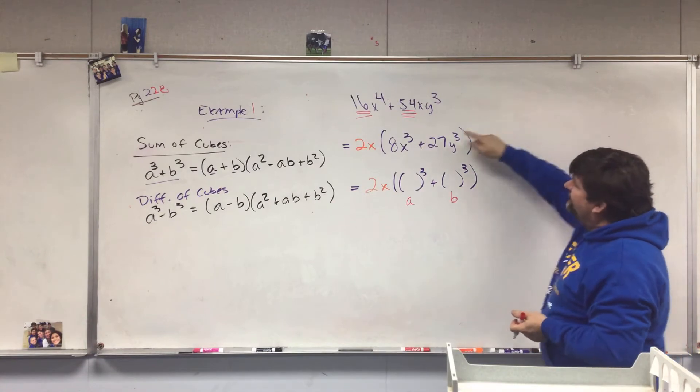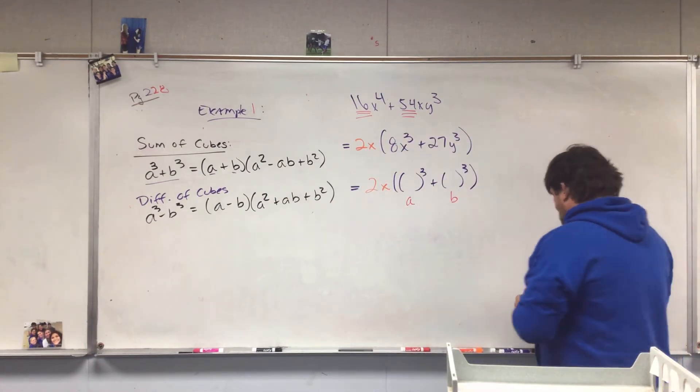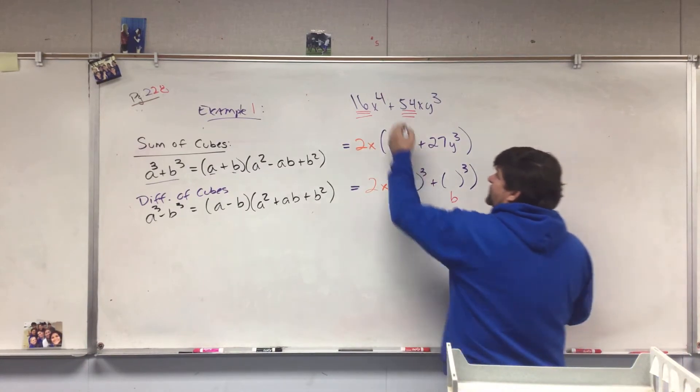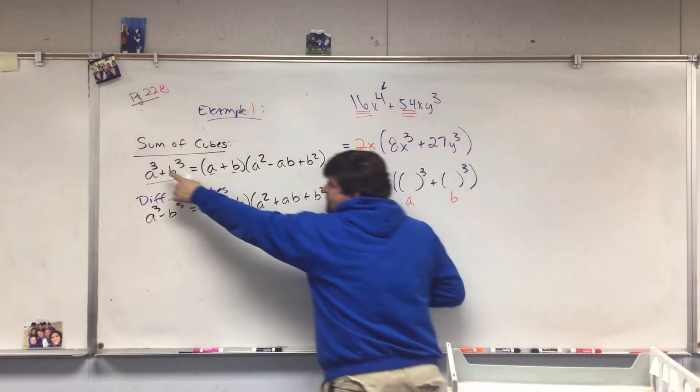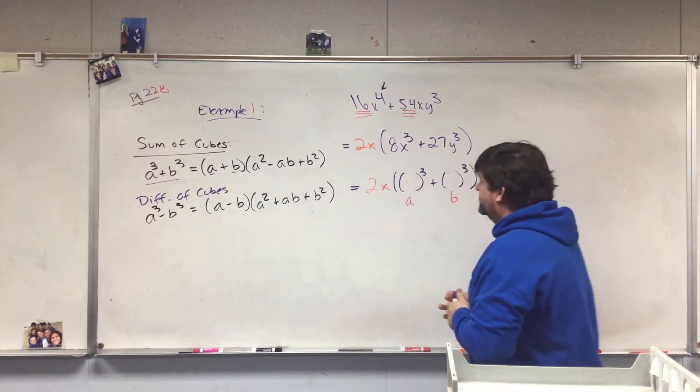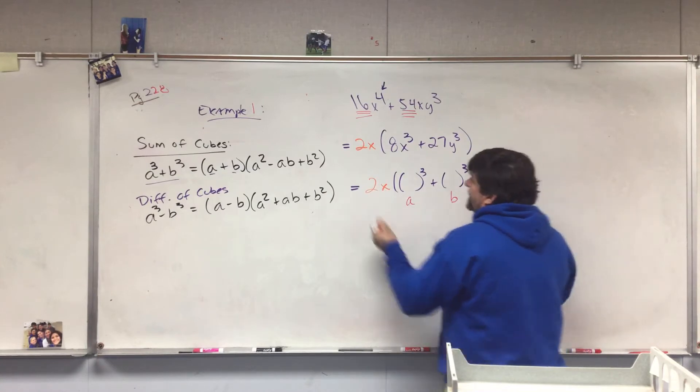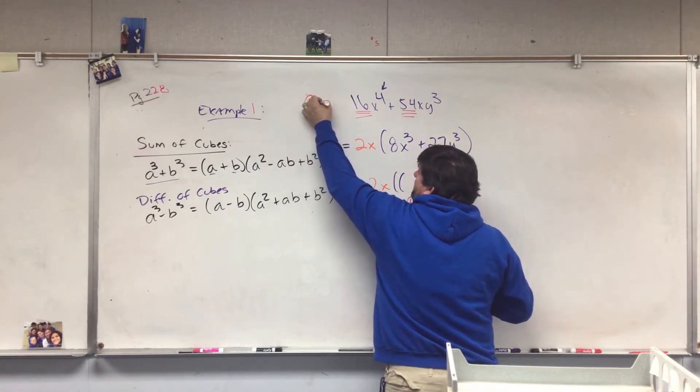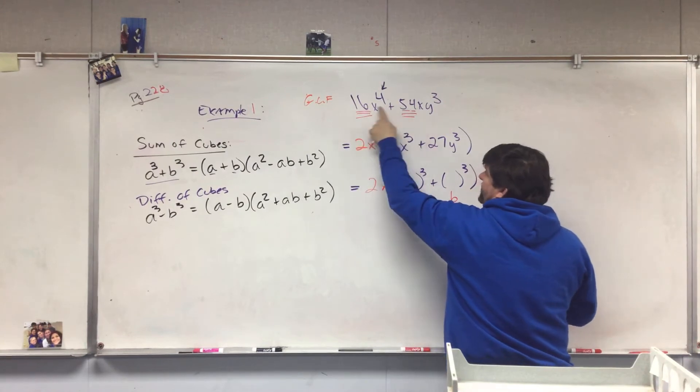So since 16 and 54 aren't a perfect cube, plus we have an issue of the fact that this is X⁴ and we need cube and cube, so we've got some work to do. You're gonna first always look for the greatest common factor. So for this one I can divide 2 into both of those and I can divide X into both of those.